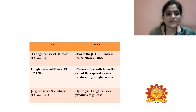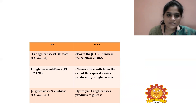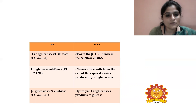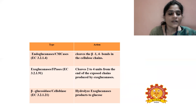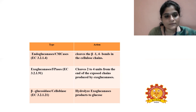As mentioned, cellulase enzyme is a multi-enzyme system — a complex of three different enzymes. These three enzymes are: first, endoglucanases, also called CMCases (carboxymethyl cellulases); second, exoglucanases, also called FPases (filter paperases); and third, beta-glucosidase, also called cellobiase.